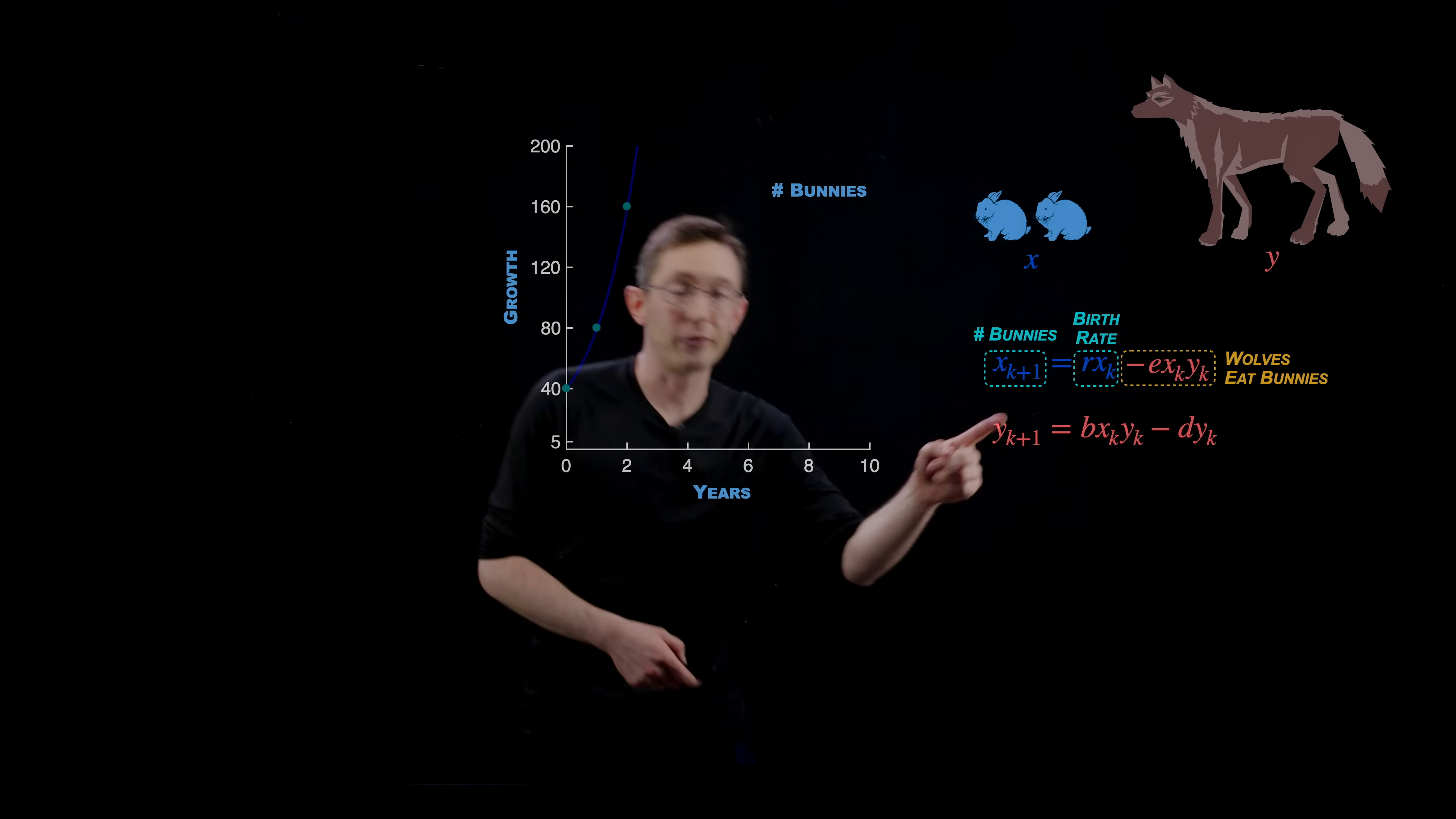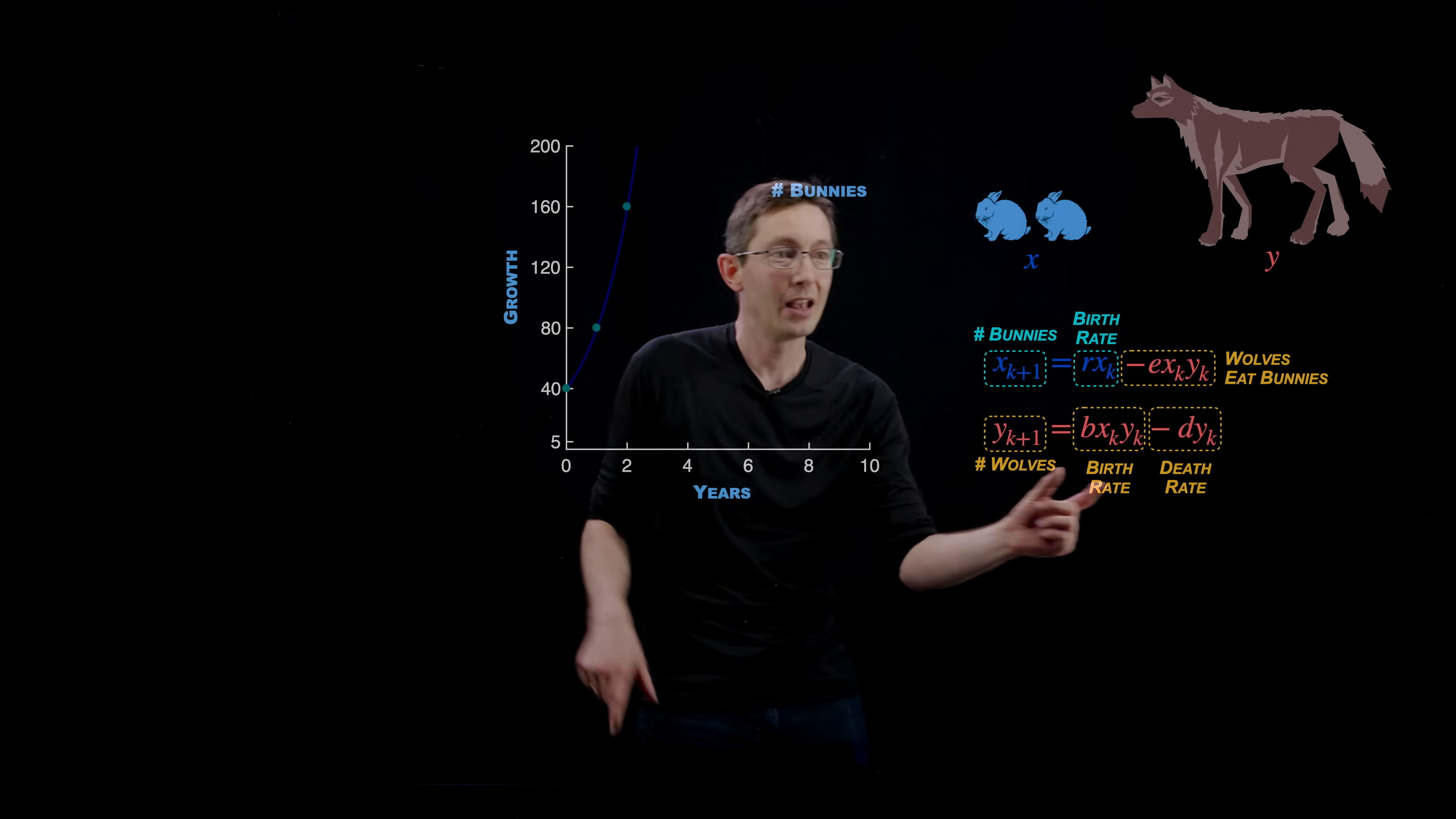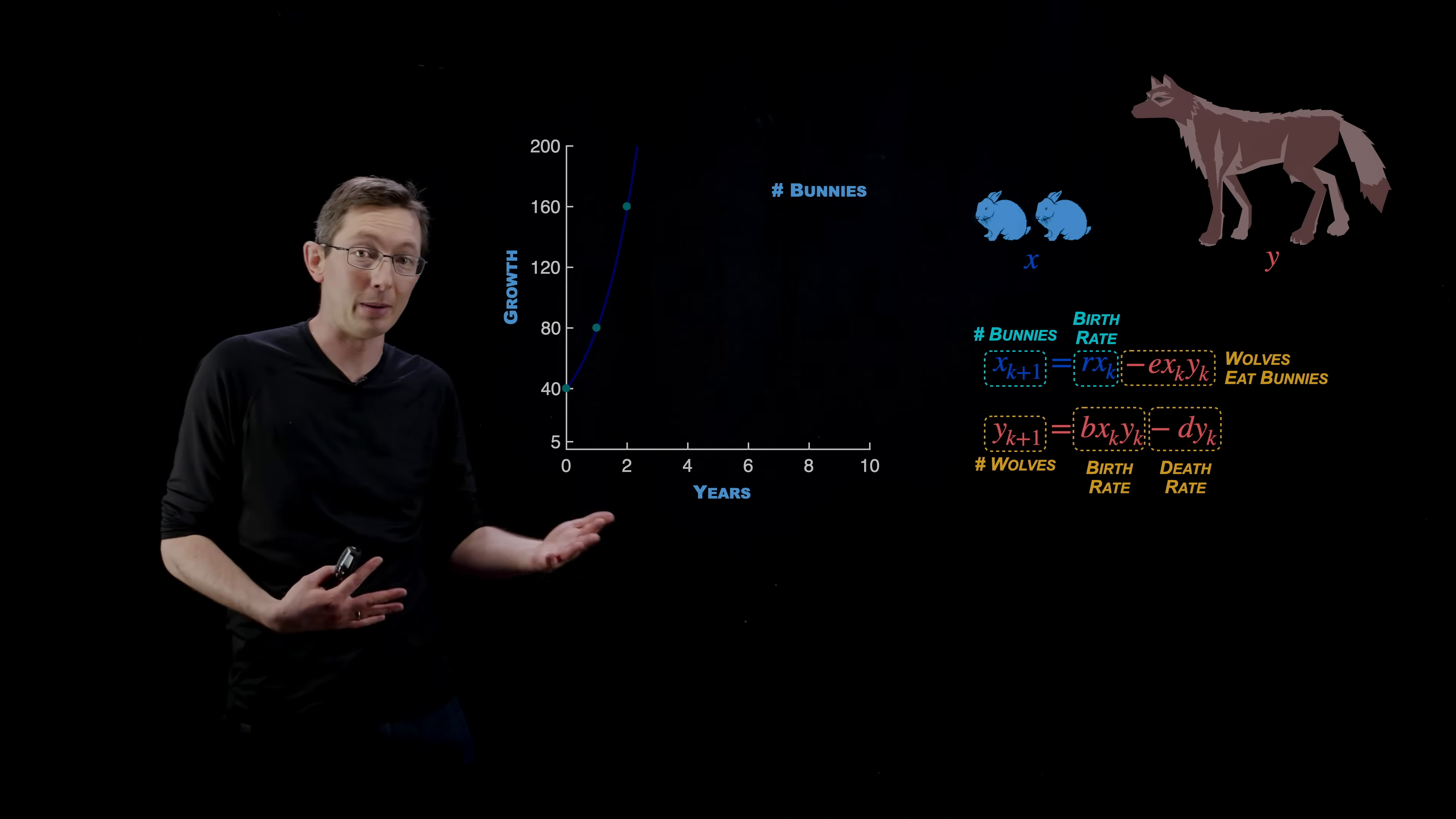Now of course there is an equation for wolves too. The number of wolves: the wolves are going to have a natural death rate. If there's no bunnies, the wolves are just going to starve to death and they'll die eventually. But they're going to have new wolves born when they eat enough bunnies. Again, they're going to have a birth rate that's proportional to how many bunnies they eat and how many bunnies they eat is proportional to X times Y. This is not the right model. This is a very crude simplistic model, but it illustrates these population dynamics. This is called the Lotka-Volterra model and it's really useful as a toy model for population dynamics.